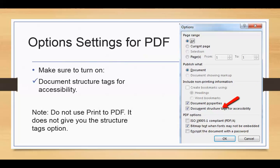One thing you don't want to do — and this is an option in many programs — is Print to PDF. The Print to PDF option does not grab those accessibility tags. You don't have the Document Structure Tags option available when printing to PDF from Word, Excel, PowerPoint, or other documents. It's very important to use File > Save As rather than Print to PDF when creating these files.